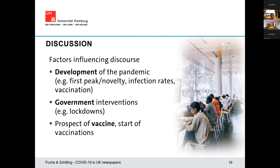To summarise this part of the analysis: we identified several factors influencing public discourse, such as the development of the pandemic with the first peak and a novelty effect. Infection rates and vaccination also influenced the development of discourse. Government interventions such as lockdowns are clearly shown in the discourse, as is the prospect of a vaccine and the start of vaccinations.